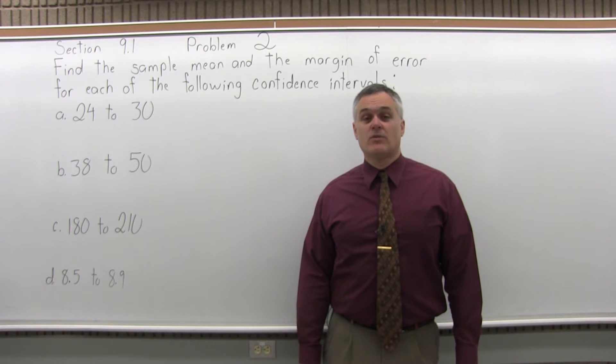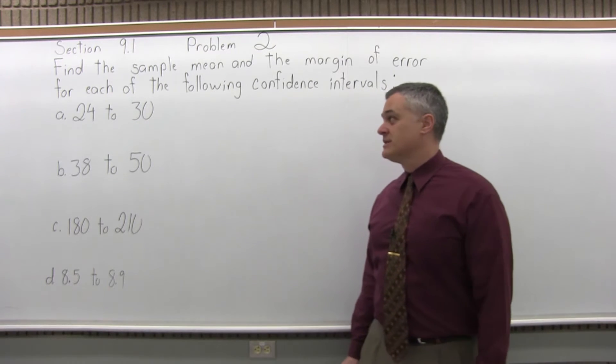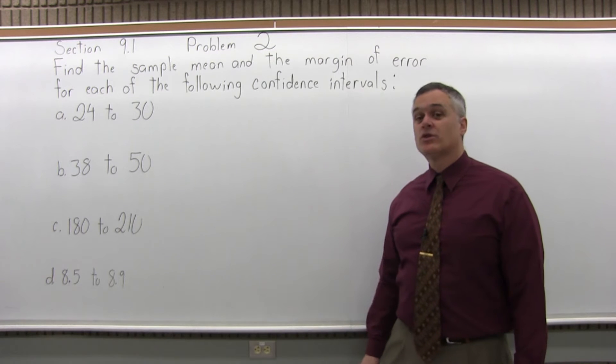This is Section 9.1, Problem 2. It says find the sample mean and margin of error for each of the following confidence intervals. And the first one goes from 24 to 30.